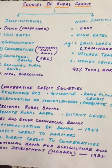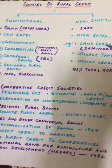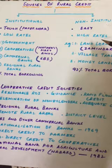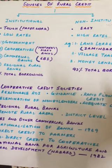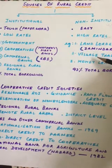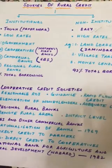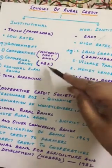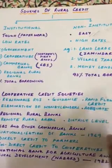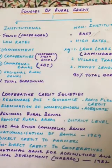Non-institutional credit sources are not very reliable because they charge a very high rate of interest. Private money lenders and zamindars charge a very high rate of interest from farmers, and farmers are sometimes unable to pay back the loan. In contrast, institutional credit has low rates, but it is harder to access due to the lot of paperwork involved.